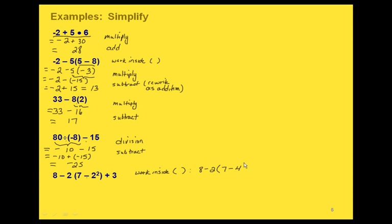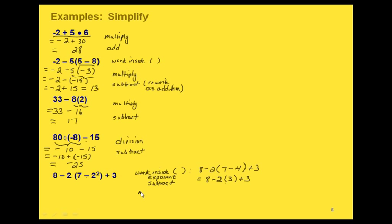Working with our exponent first — 2 squared is 4 — and then still inside the parentheses we need to subtract. So if we take 7 minus 4, that gives us 3. Now we have a subtraction, a multiplication, and an addition, so we're going to do the multiplication next.